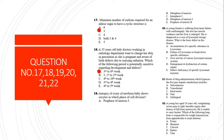Question 19: Autopsy of a newborn baby's ovary shows oocytes in which phase of cell division? The correct option is A - prophase of meiosis one, because at the time of birth, the ovary contains oocytes in the prophase of meiosis one. After ovulation, they complete their first division and arrest in the metaphase of meiosis two.